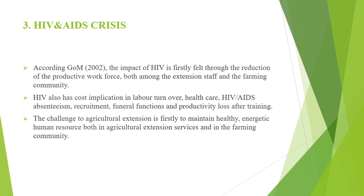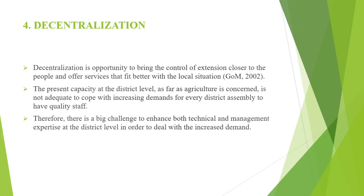Another challenge to agricultural extension delivery is decentralization. With the coming of the new democratic dispensation, government decided to devolve power to the district level on the assumption that interventions are more effective when the decision-making process is at the lowest level of action. Decentralization is an opportunity to bring the control of extension closer to the people and offer services that fit better with the local situation. However, the present capacity at the district level is not adequate to cope with increased demands. Therefore, there is a big challenge to enhance both technical and management expertise at the district level.